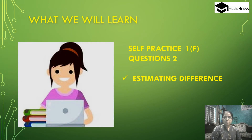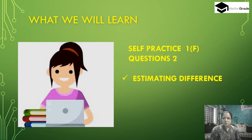Today we will learn and solve self practice exercise questions 1 to 5, self practice 1F. The chapter name is 'Knowing Our Numbers' and topics are estimating sum, estimating difference, estimating product, and estimating quotients.